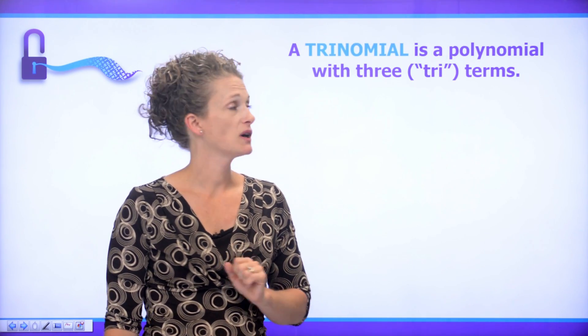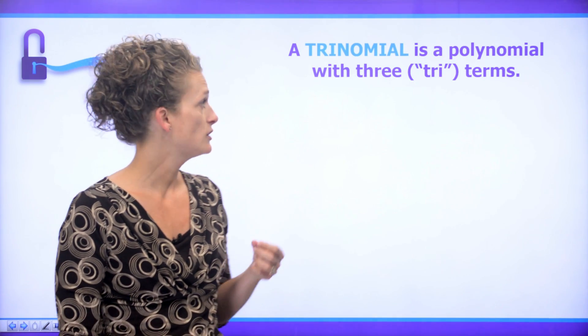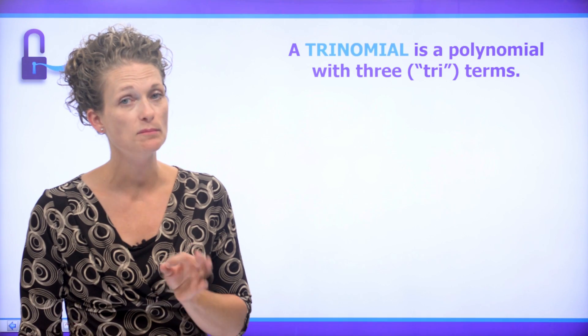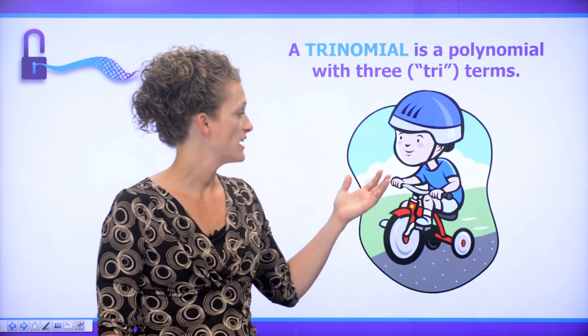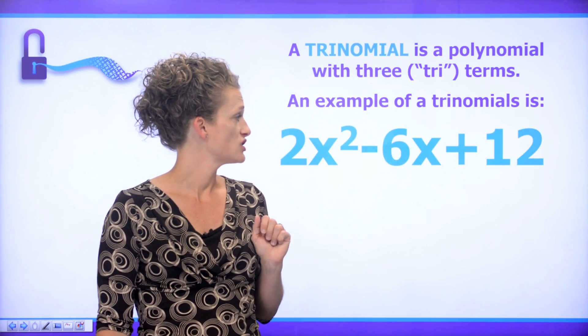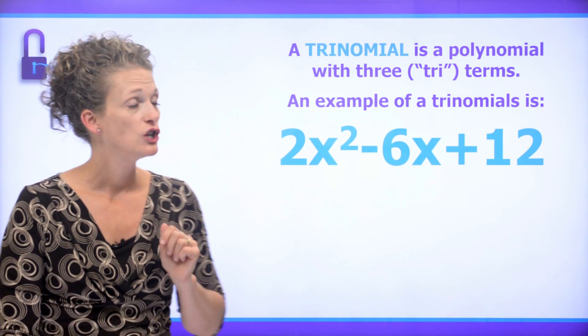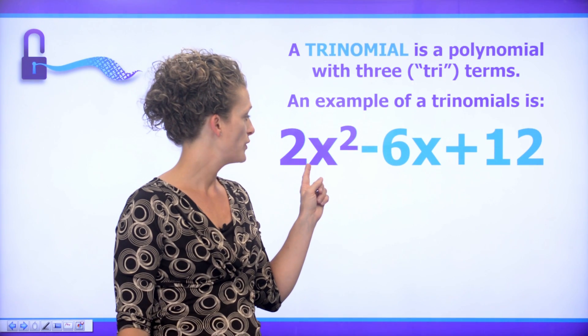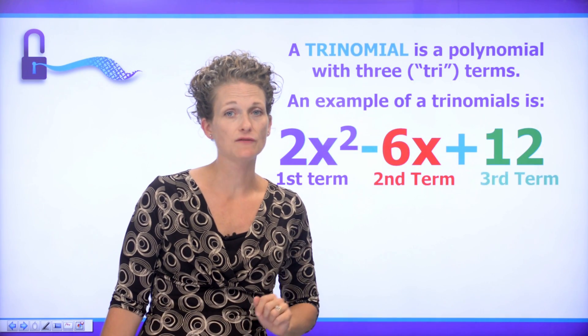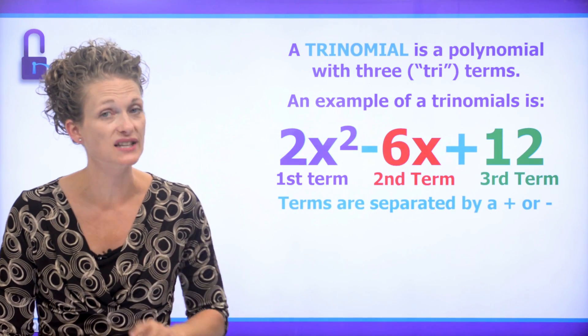The last one we want to look at is a trinomial, and it is a polynomial with three terms. The prefix tri means three, like a tricycle that has three wheels. An example of a trinomial is 2x squared minus 6x plus 12. Notice that we have the first term, we have the second term, and we have the third term. And terms are separated by a plus or minus.